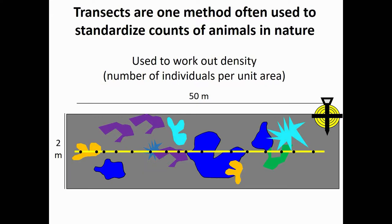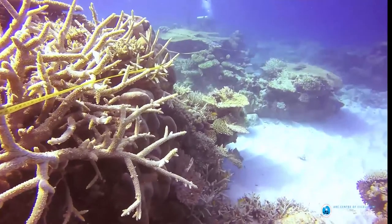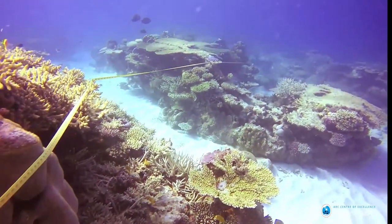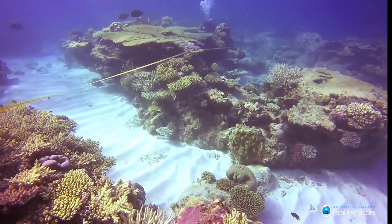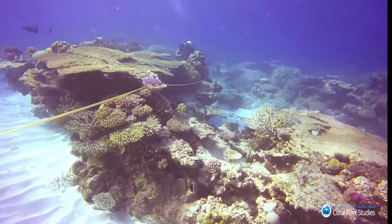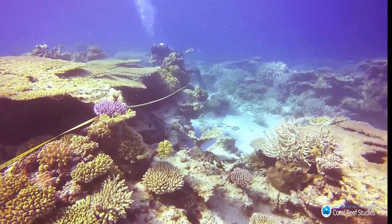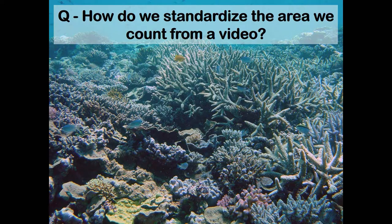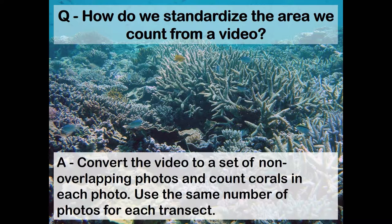This also allows us to compare different sites because we've always sampled the same amount of area. On coral reefs, we often use video transects to count corals and fish. You can see the transect laid out along the reef and a diver swimming along it counting corals and fish. One way to standardize the area from video is to convert it to a set of photos, making sure those photos don't overlap each other, and then count the corals present in each photo.